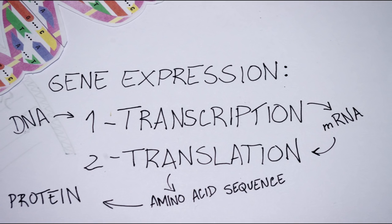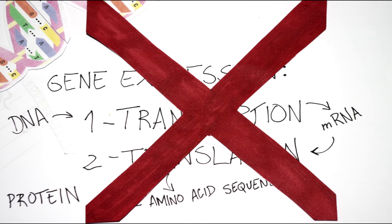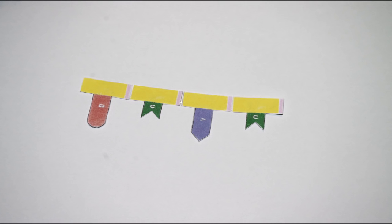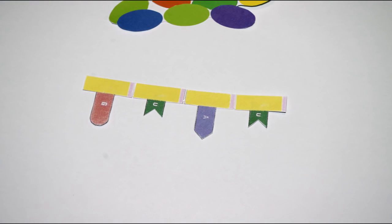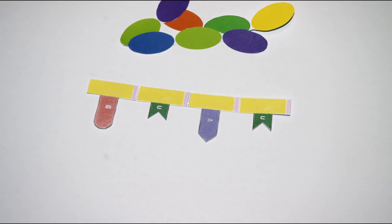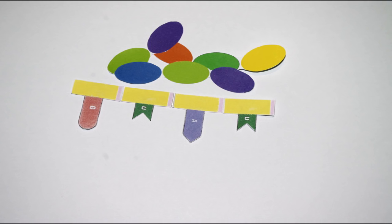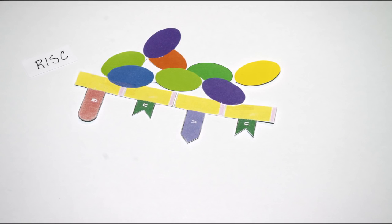By promoting the degradation of the messenger RNA. To do this, organisms use small pieces of RNA complementary to the specific sequences of messenger RNA, the short interfering RNA, or siRNA for short. This siRNA is incorporated in a protein complex called RNA-induced silencing complex, commonly referred to as RISC.